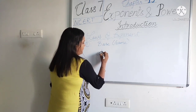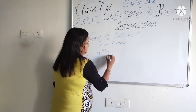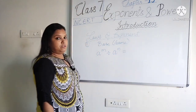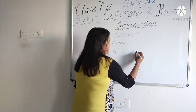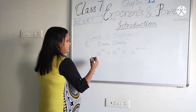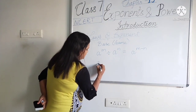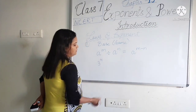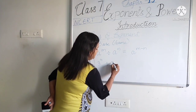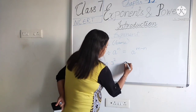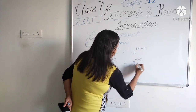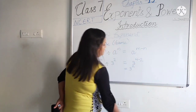The second law: when the base is the same but it is the case of division, you subtract the exponents — a^m ÷ a^n = a^(m−n). For example, 3 raised to the power 4 divided by 3 raised to the power 2 equals 3 raised to the power 4 − 2, which is 3 raised to the power 2.